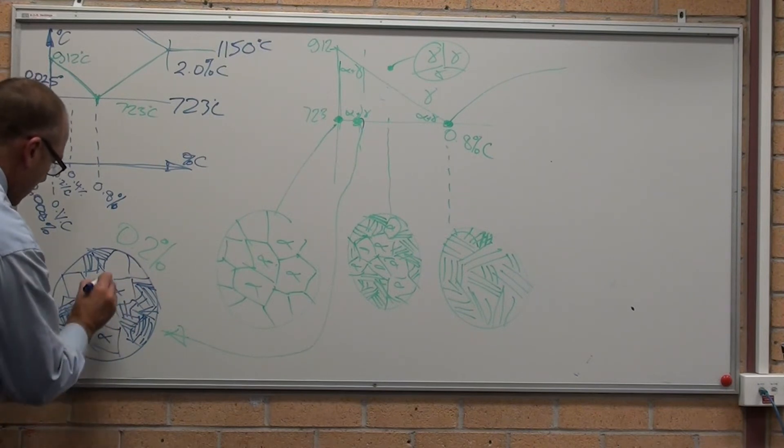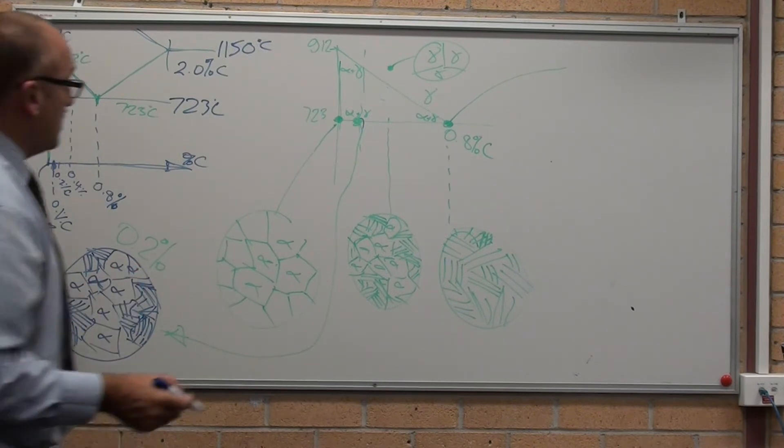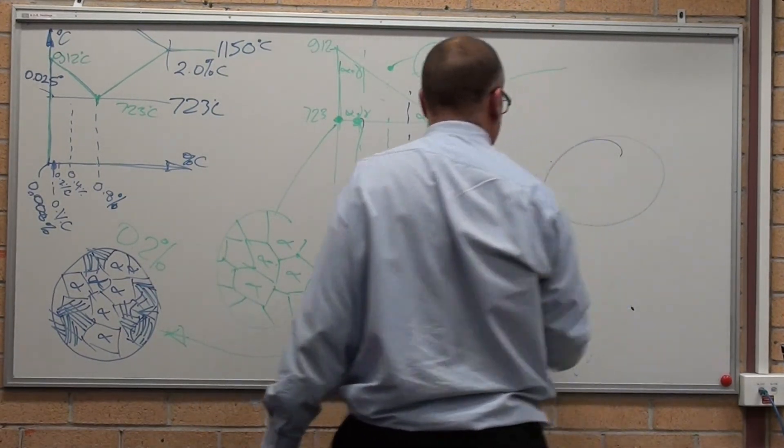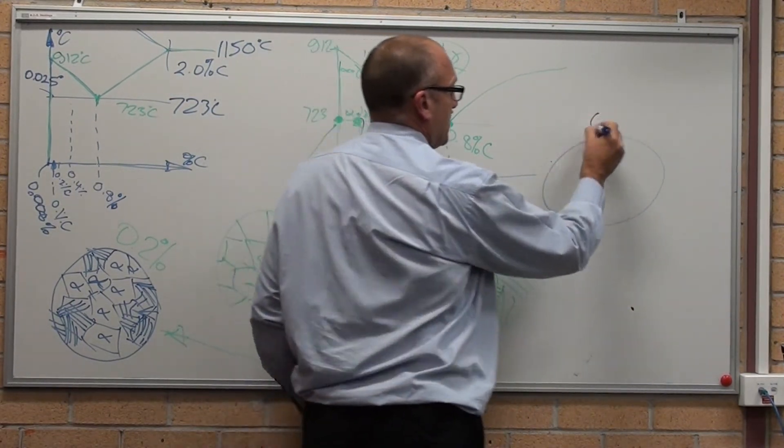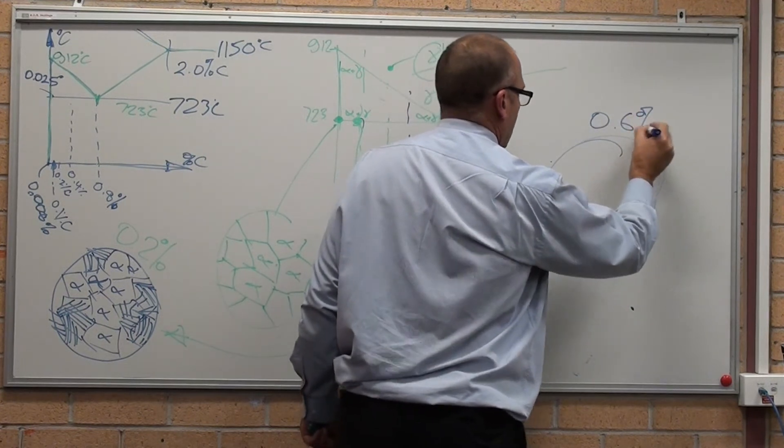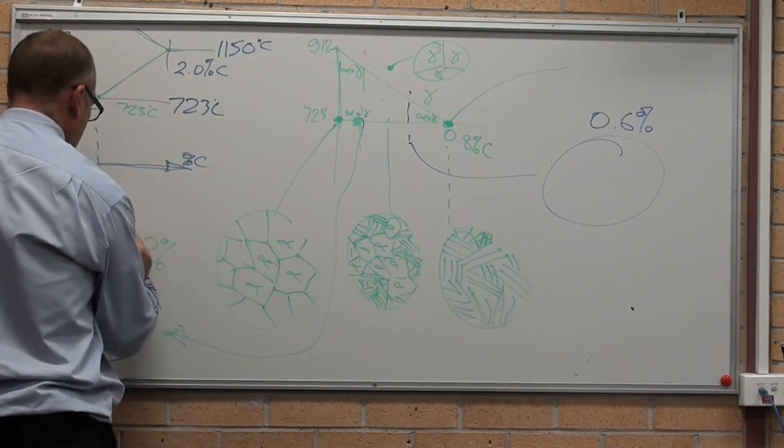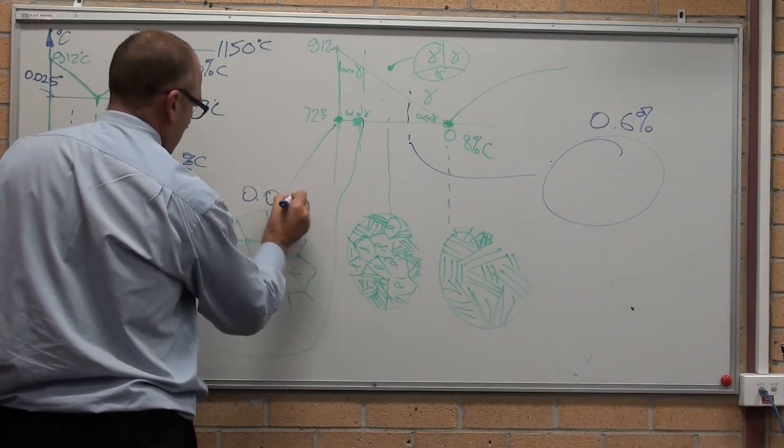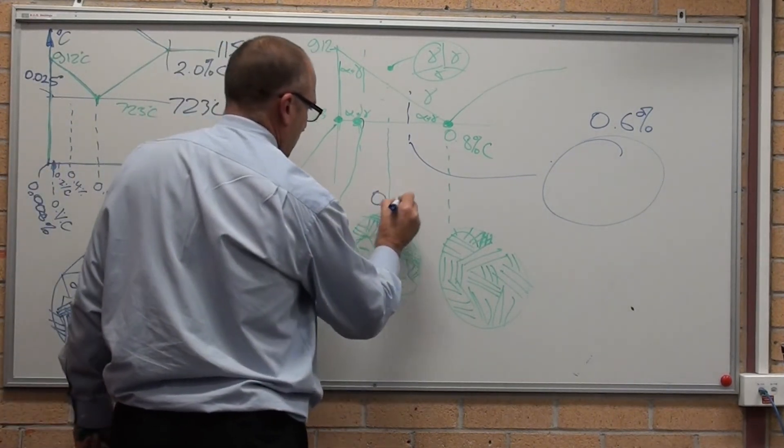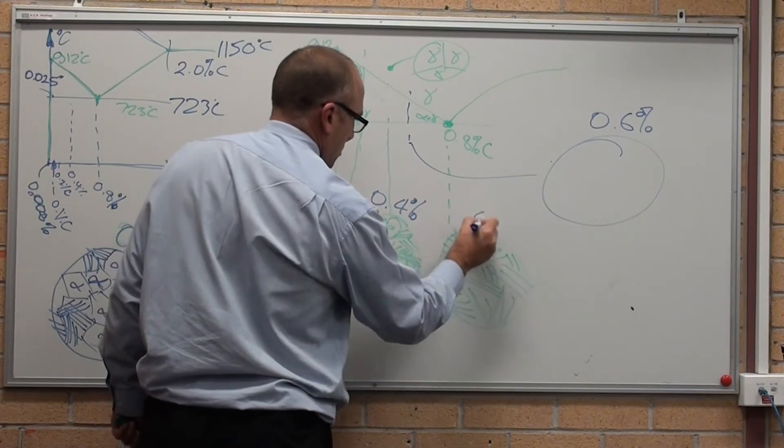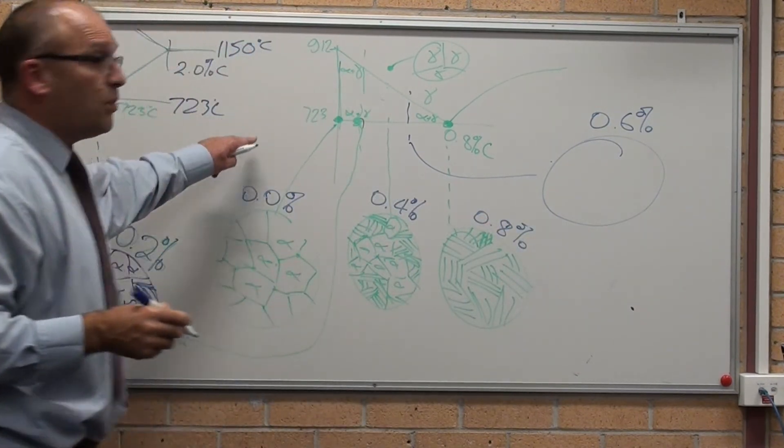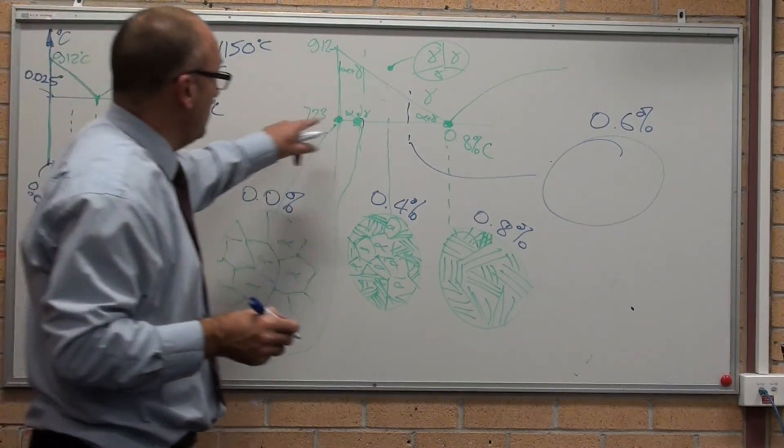That's all ferrite. And obviously here, continuing on the same vein, I'll draw this one over here. 0.6% carbon steel, that was 0.2%. That's 0%, 0.4%, 0.8%, 0.6% carbon steel.